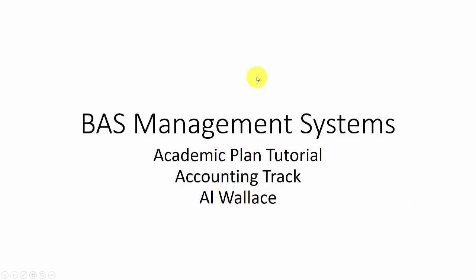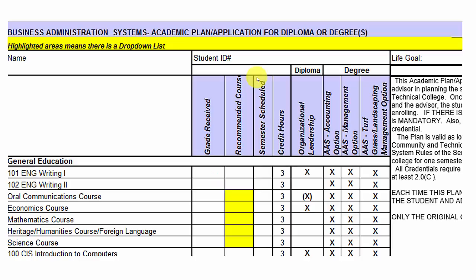Good morning, my name is Al Wallace, I'm your academic advisor, and this is a short tutorial on how the activity plan accounting track works. This plan is an Excel spreadsheet which we can email back and forth. I'll set something up for you and we'll put your name at the top, your student ID, and your life goal or something you'd like to do in terms of your working life.